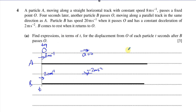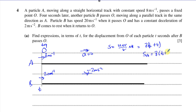For particle A, it's moving at constant speed, so displacement equals speed times time. The time for A is T plus 4. So we can say SA equals 8 times (T plus 4), which gives 8T plus 32. When T equals zero, A has already moved 32 meters because B started 4 seconds after A.